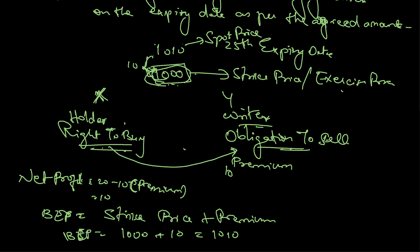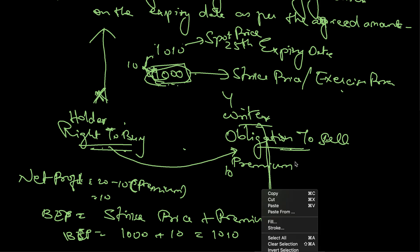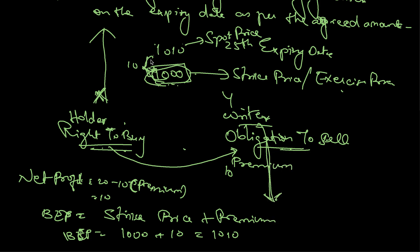At the break-even point, neither the holder nor the writer makes any profit. The holder is bullish — he believes the price will go up. The writer is bearish — he believes the price will come down.